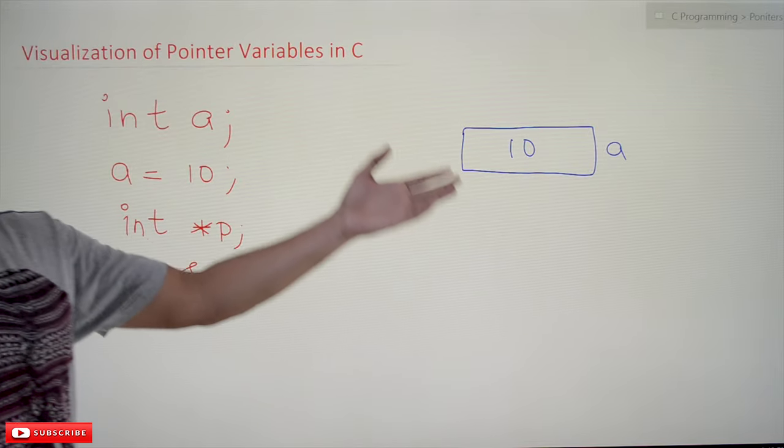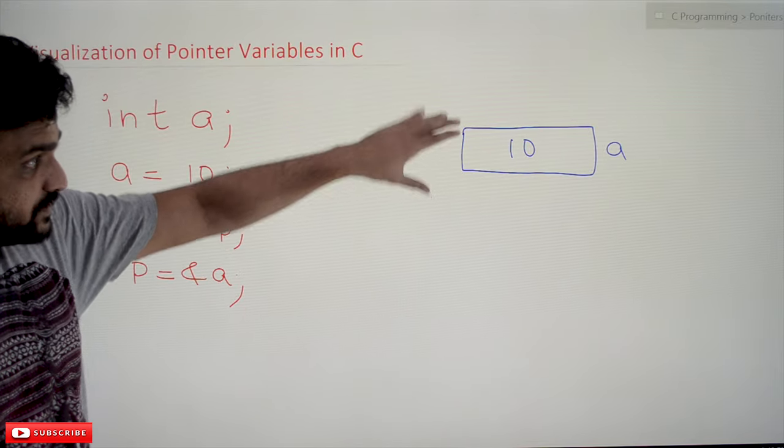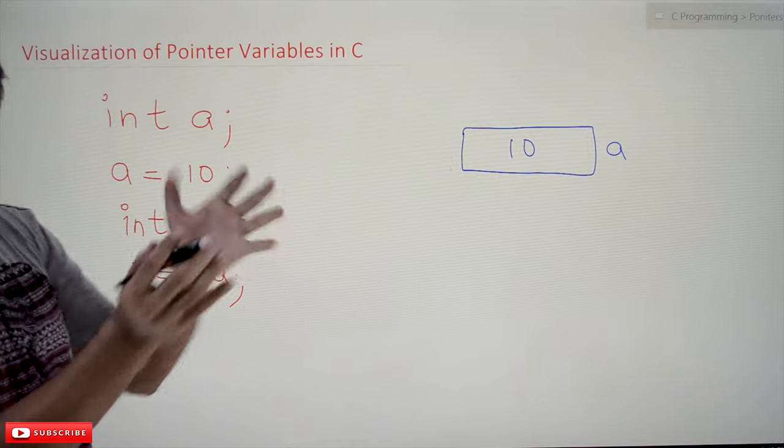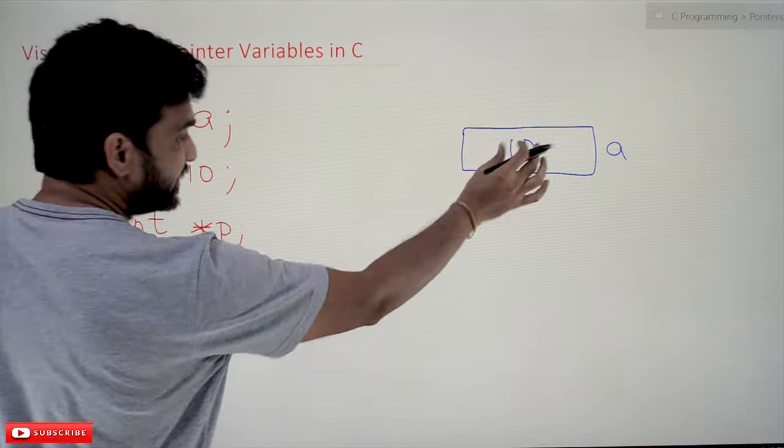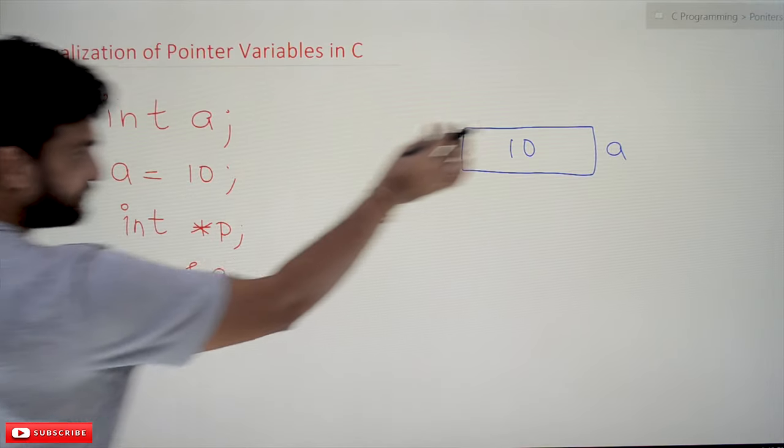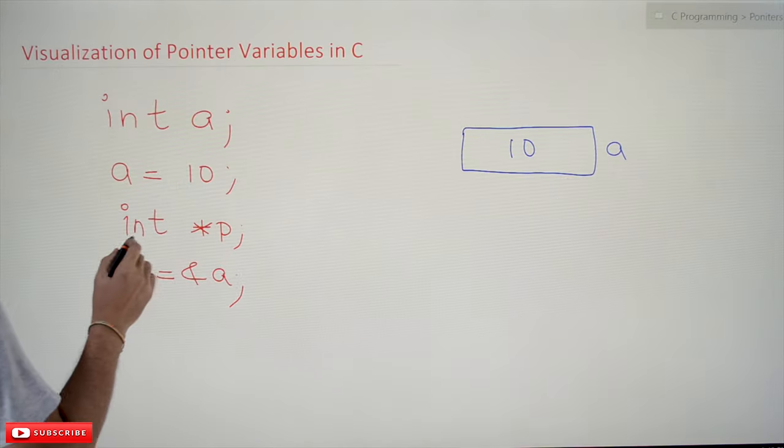This entire block is representing all those memory blocks. So 10 is getting stored in variable a. And now int star p, a pointer variable p has been created.